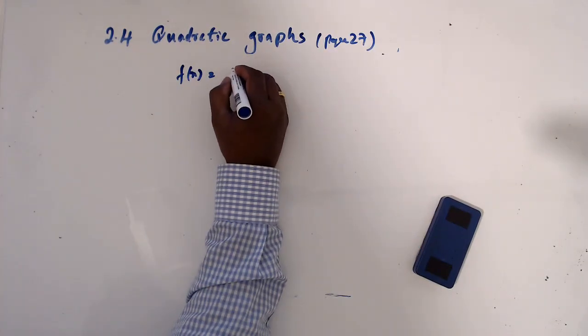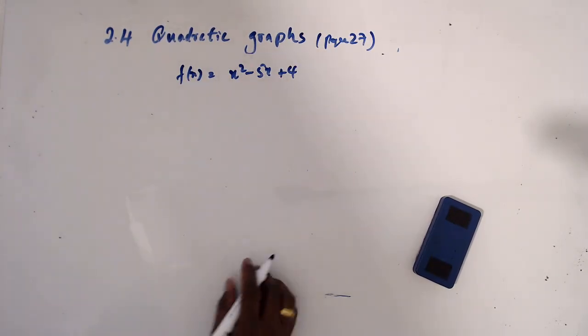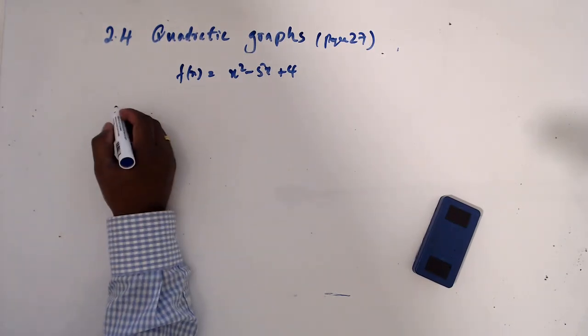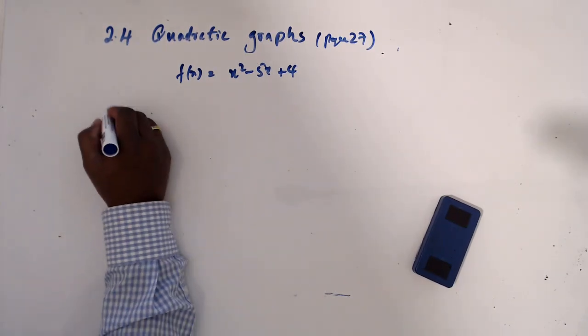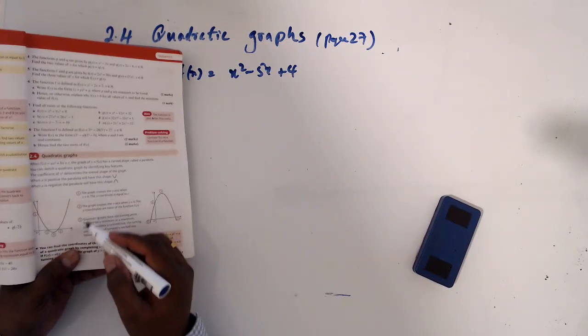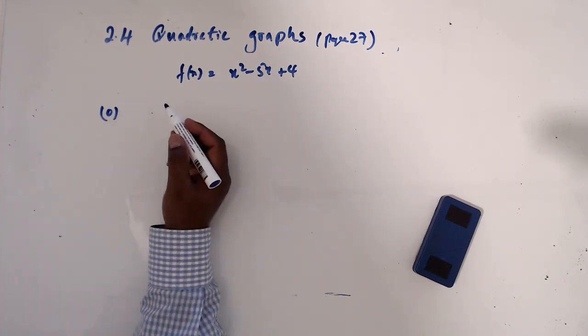So f(x) equals x squared minus 5x plus 4. In here, first of all I'll do step 0, because I can see in this book there are 1, 2, 3 steps. So I'll introduce this as step 0.